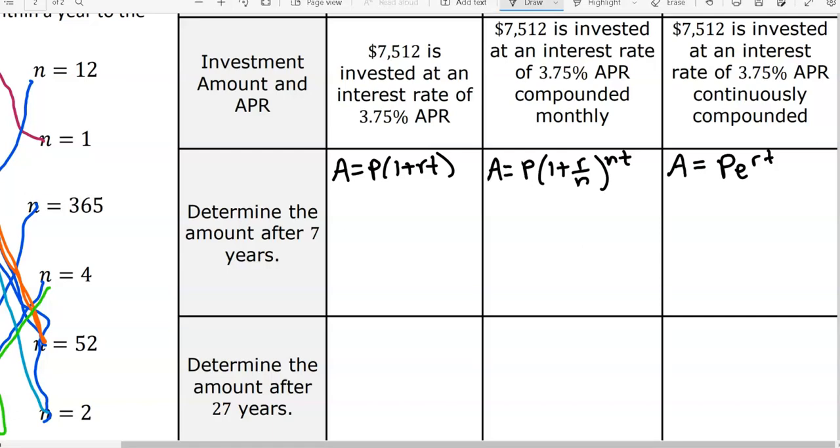Are we going to replace E with a number? No, never. Because E is a number. E is already a number, don't change it. Help me set up the first one. How can I figure out the amount after seven years? What am I going to use for A? We don't know yet, right? That's what we're trying to find out. What did I start off with according to the description? $7,512. One plus, what was my rate? It's 3.75%, but what is that as a rate? 0.0375. So make sure we change our percentages into rates. And my T for this one? It is 7.